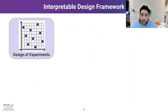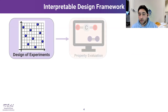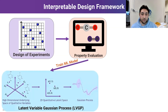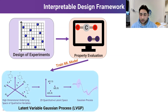To do this, we implemented an interpretable design framework where we start with a design of experiments, then evaluate the performance of our materials using grand canonical Monte Carlo simulations, and then train a machine learning model called the Latent Variable Gaussian Process model — a vital part of our framework.